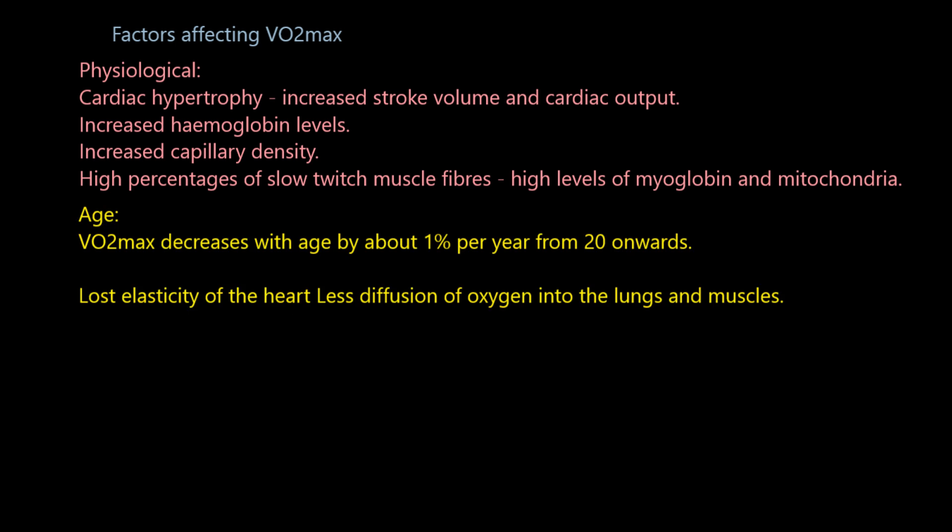Next up is age, and this is quite straightforward. Sadly, VO2max decreases with age — about 1% per year from the age of 20 onwards. So unless you stay on top of it through training and fitness, your VO2max will decline by about 1% per year. The main reasons are loss of elasticity of the heart, which ultimately leads to less diffusion of oxygen into the lungs and muscles.